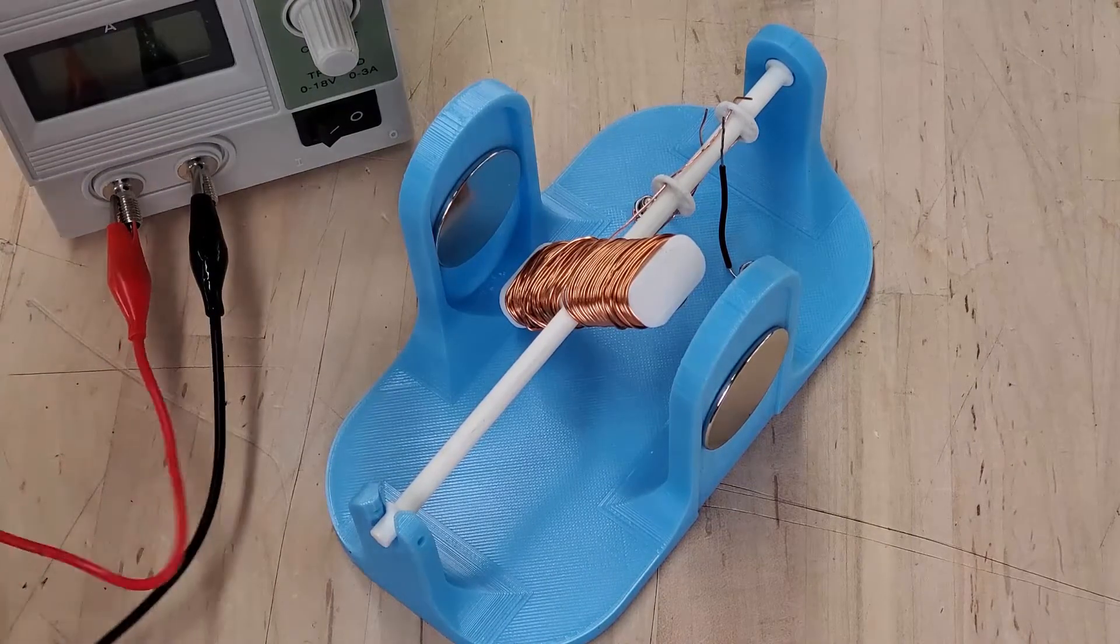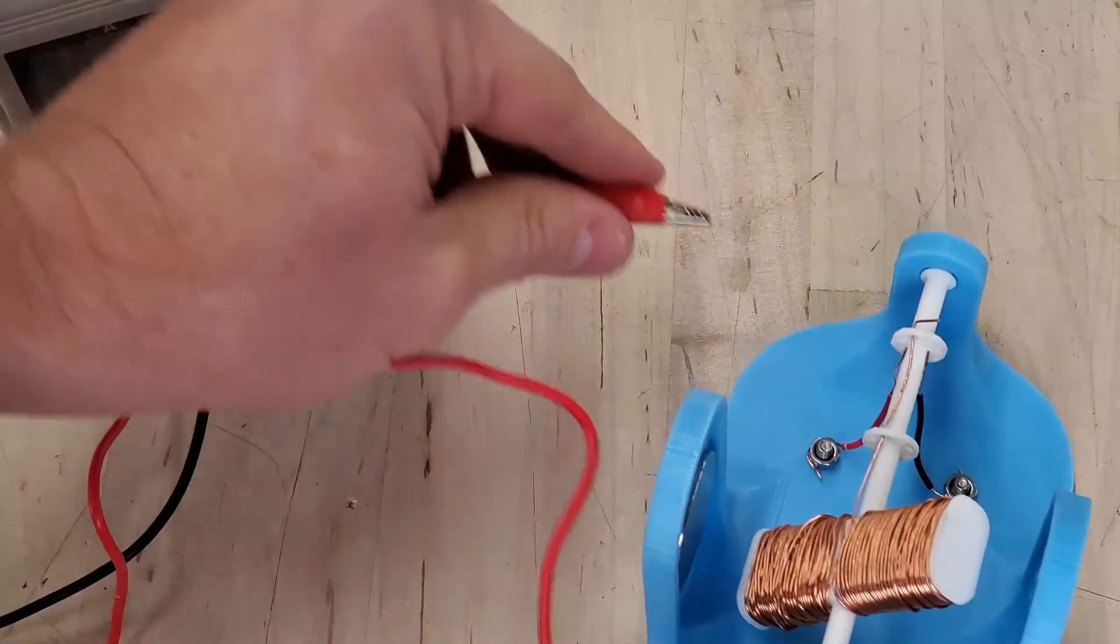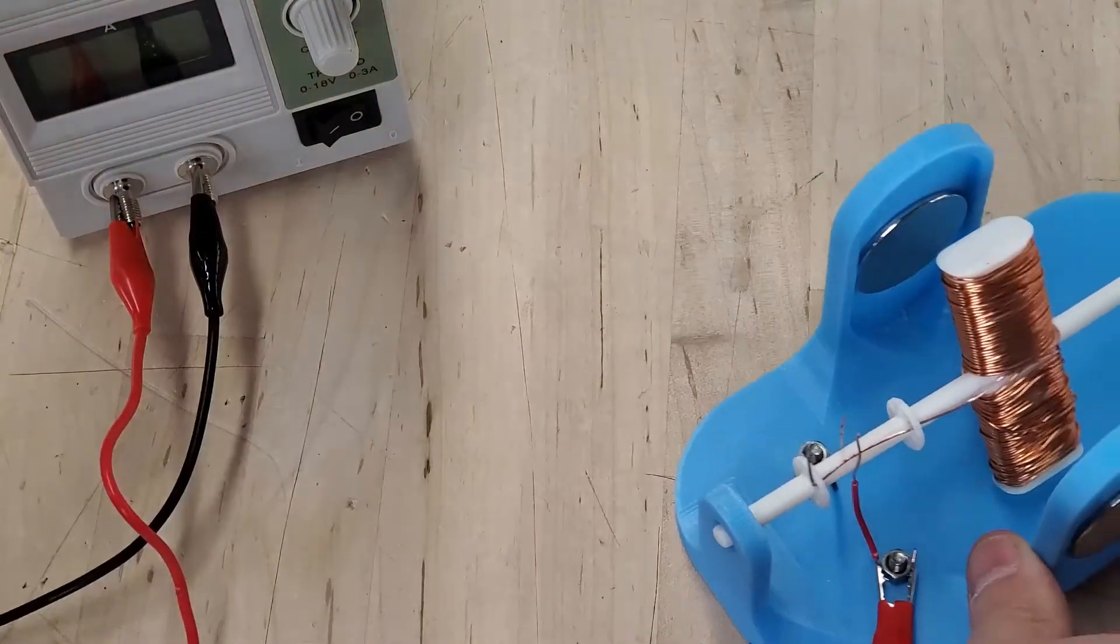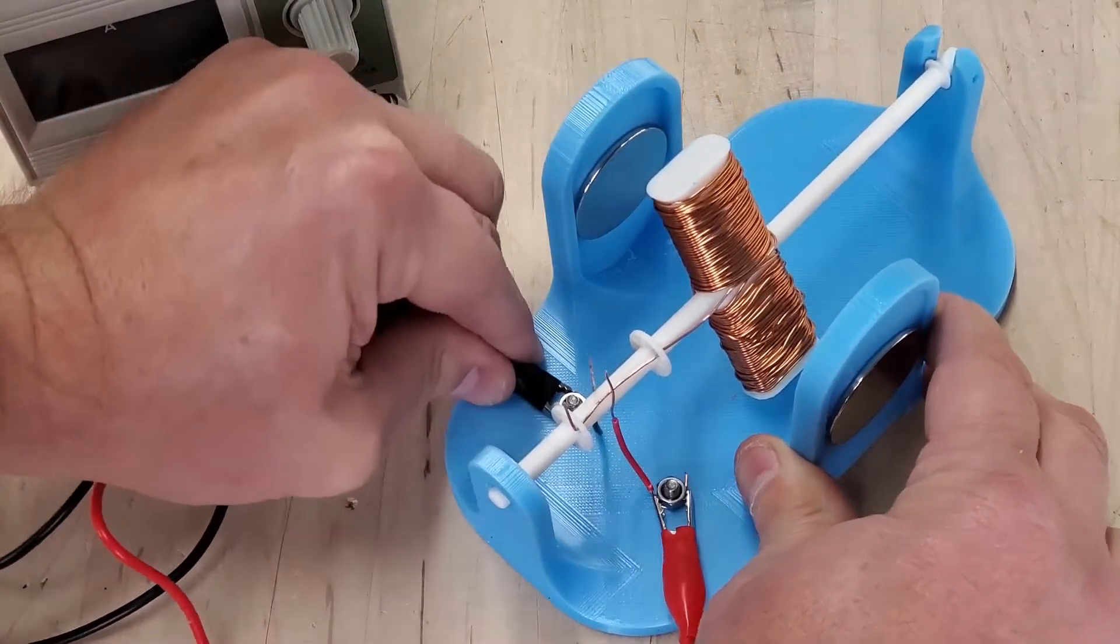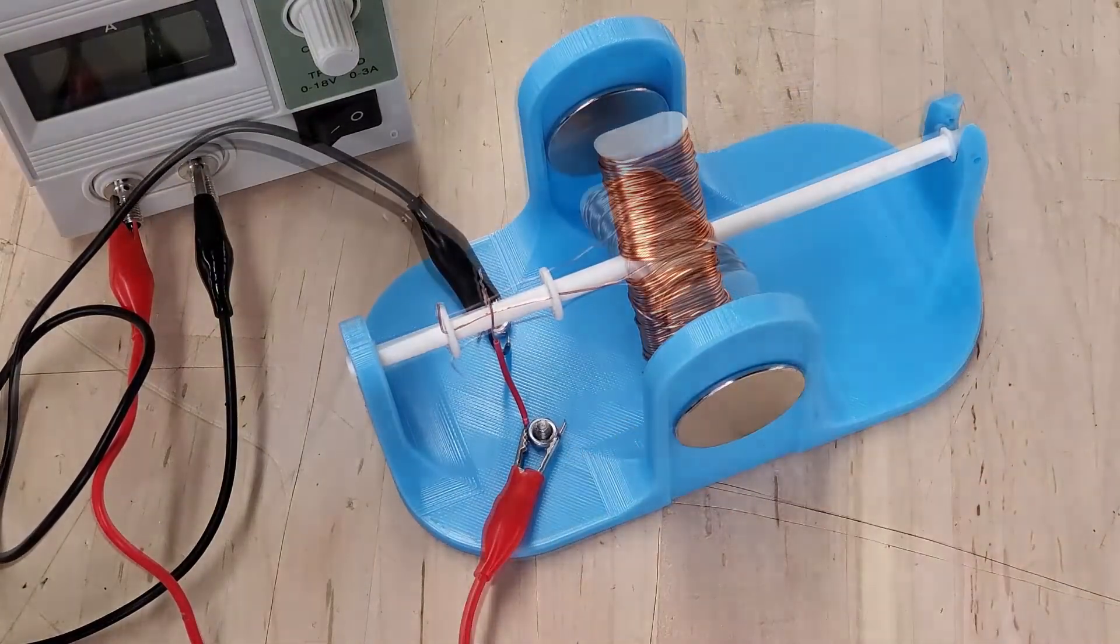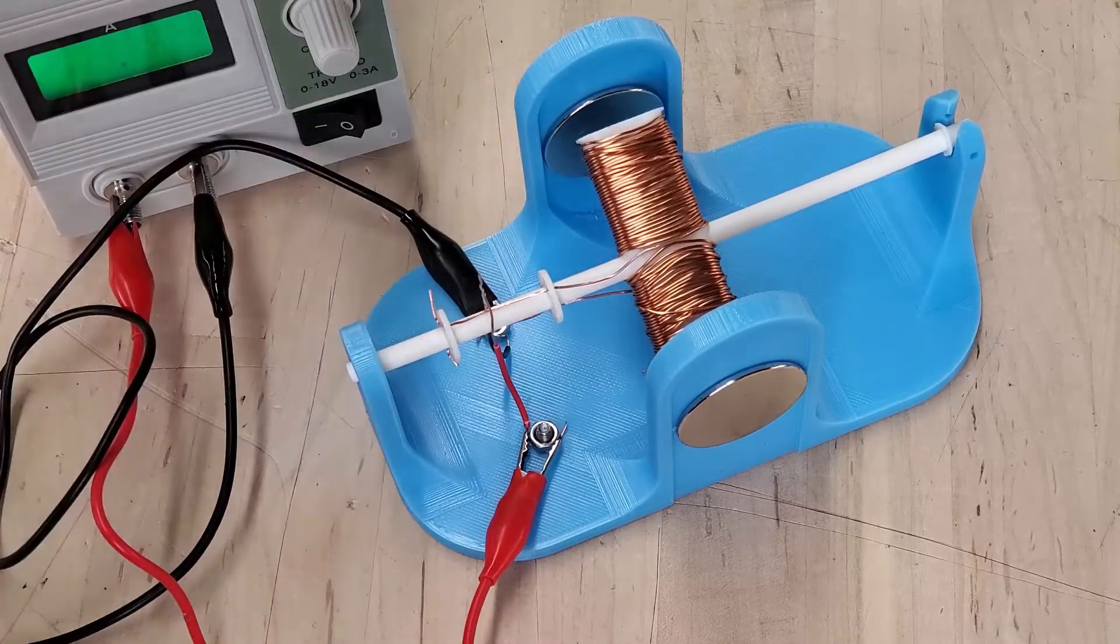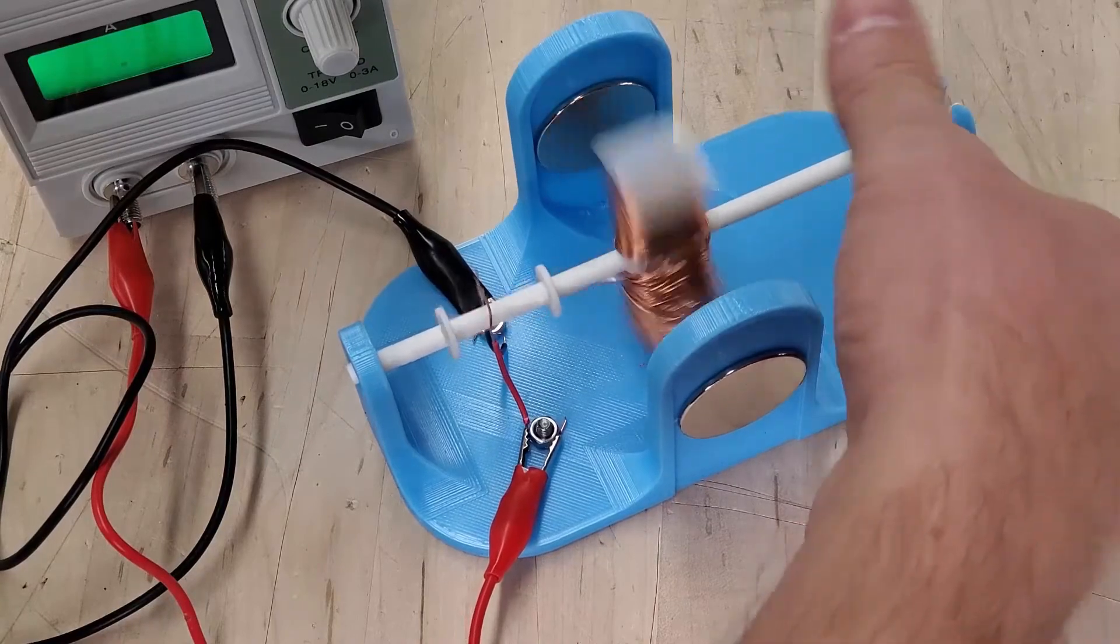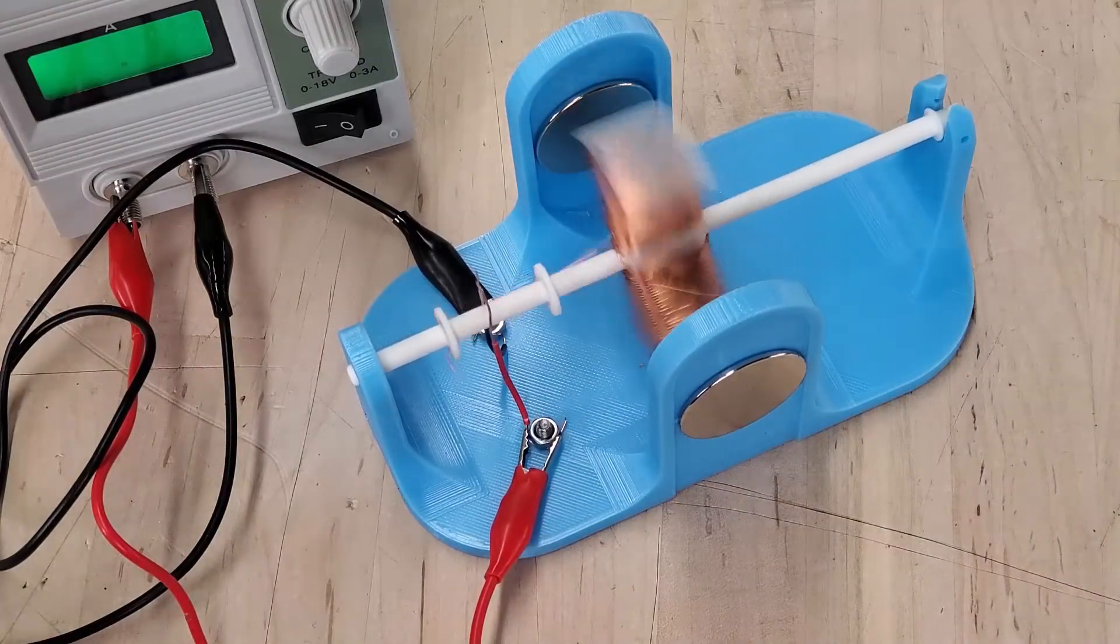Take your alligator clip leads and attach them to your terminals. Turn on your power supply, give your shaft a little twist or turn, and with any luck your DC motor will start spinning.